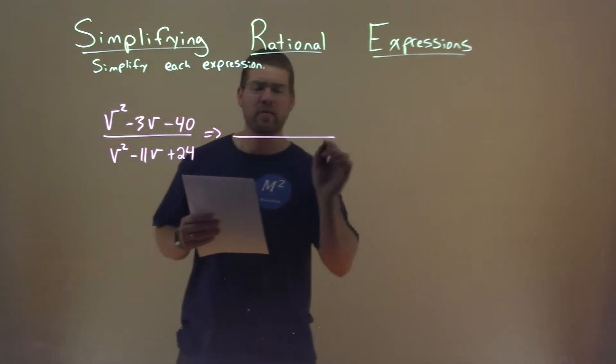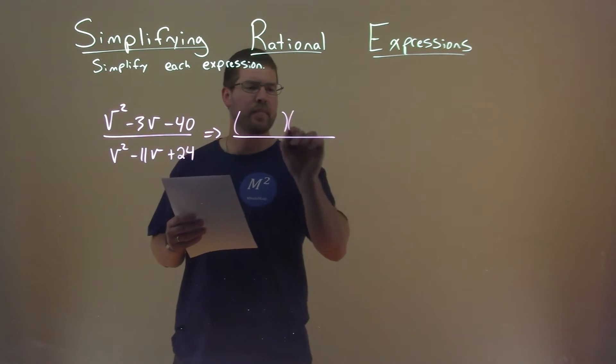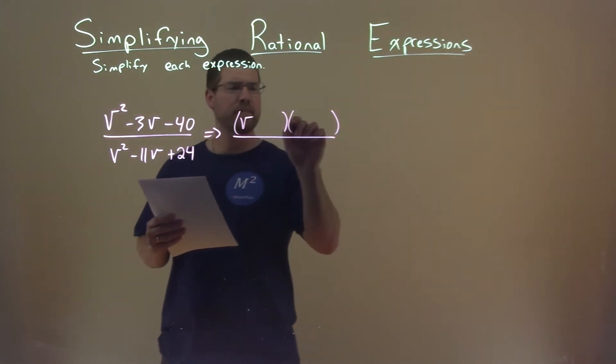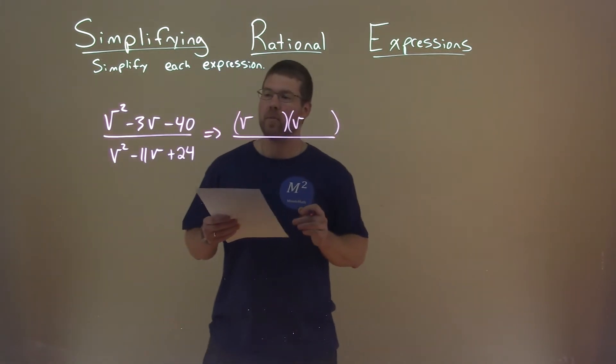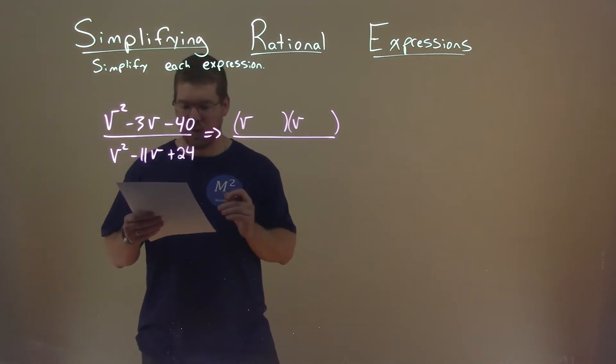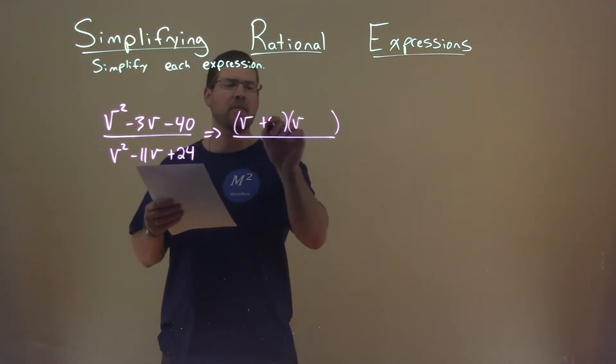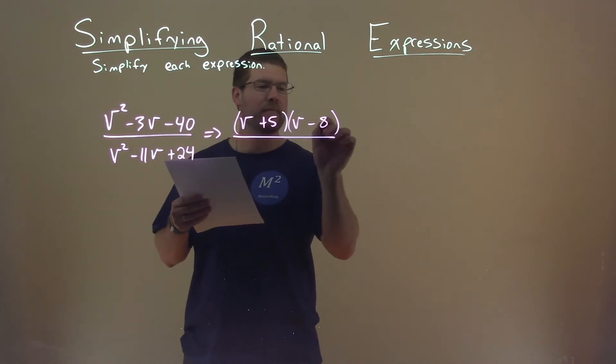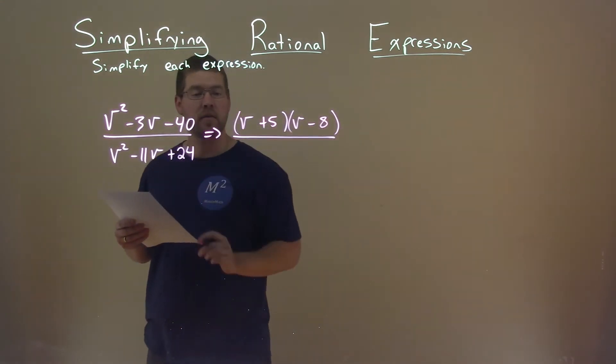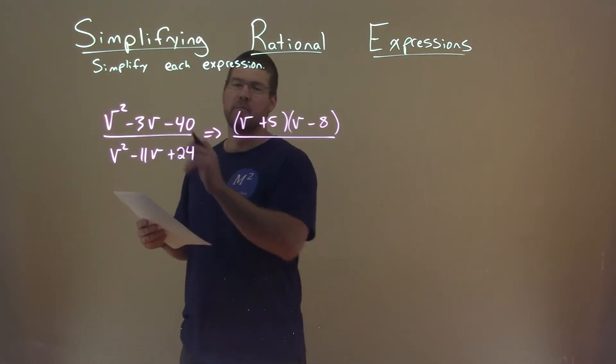Well, let's see if we can factor out the numerator here. It looks like it's pretty easy. So what two numbers multiply to be negative 40 but add to be negative 3? And that's a positive 5 and a negative 8. Negative 8 times 5 is negative 40. We add the two, we get negative 3.